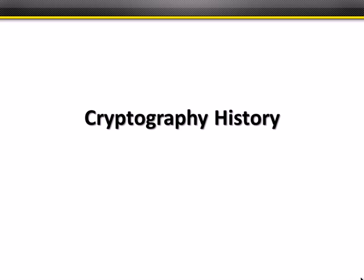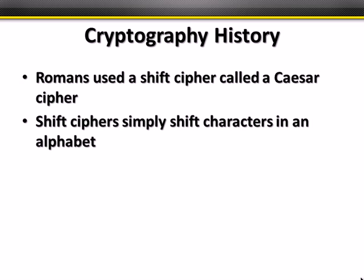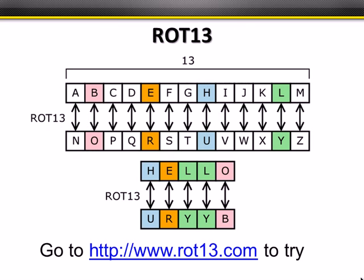A short history of cryptography: the Romans used a shift cipher called the Caesar cipher. Shift ciphers move letters by a fixed amount — for example, A becomes D with a shift of three. A classic example is ROT13, short for rotate 13 characters, where A becomes N, B becomes O, and vice versa. The interesting thing about ROT13 is that the same algorithm encrypts and decrypts — it works in both directions. So 'hello' becomes U-R-Y-Y-B.